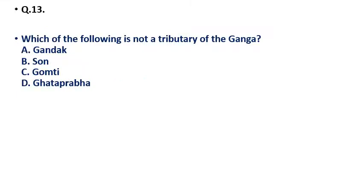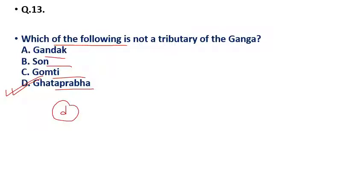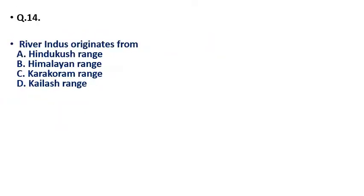Question 13: Which of the following is NOT a tributary of the Ganga — (a) Gandak, (b) Son, (c) Gomti, (d) Ghataprabha? The river which is not a tributary of Ganga is Ghataprabha. So option D is the correct answer for question 13.